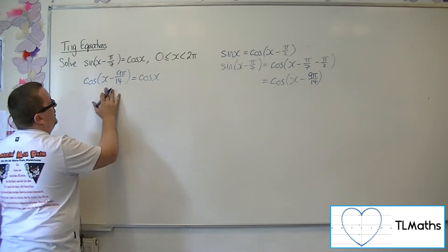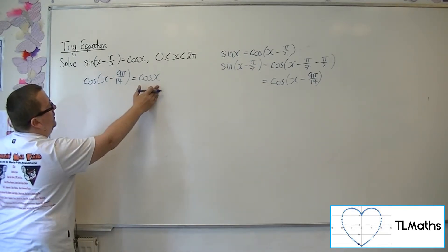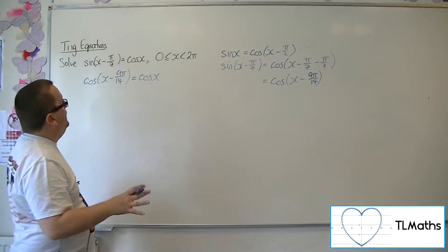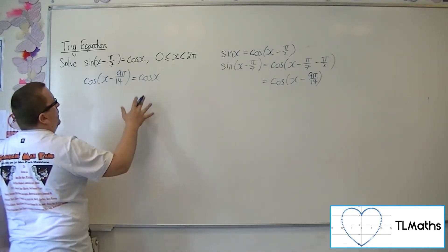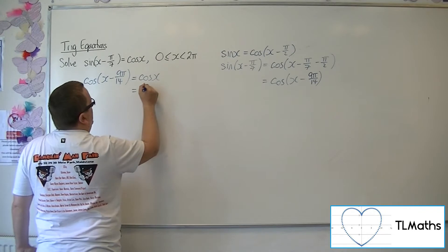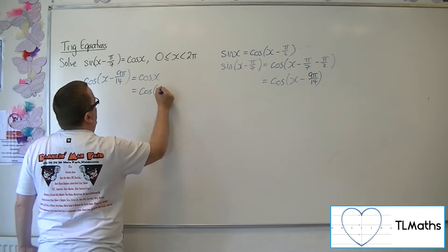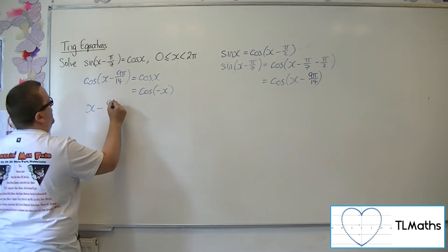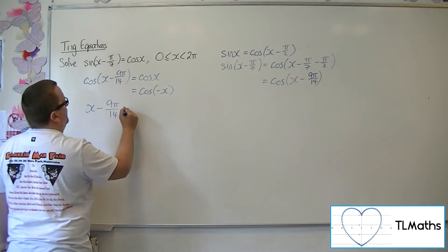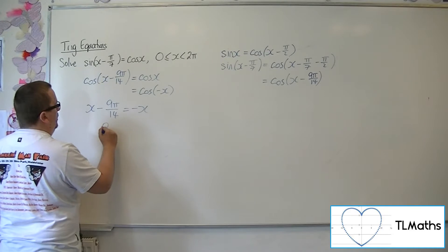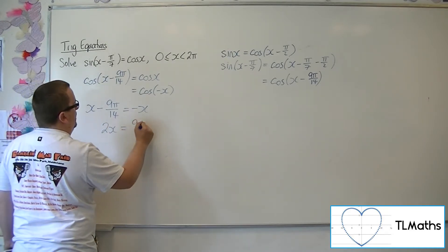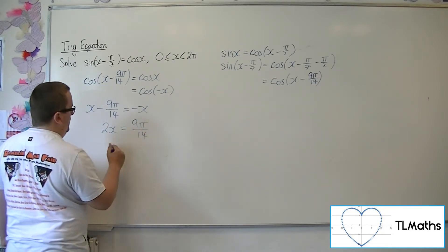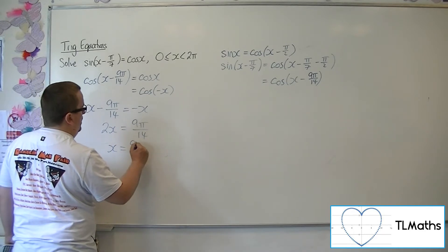Now I can't put x minus 9 pi over 14 equal to x, because that doesn't make any sense. So, cosine of x we know is cosine of minus x, so x minus 9 pi over 14 must be equal to minus x. So 2x must be equal to 9 pi over 14, so x would be 9 pi over 28.